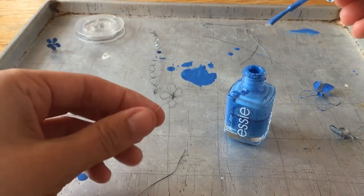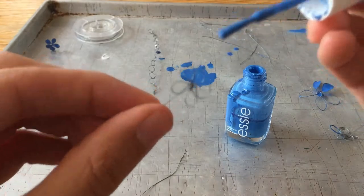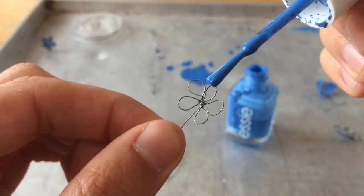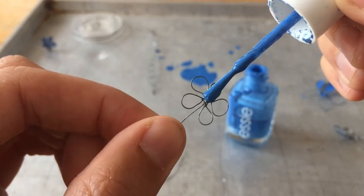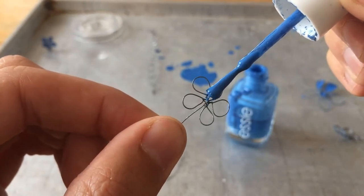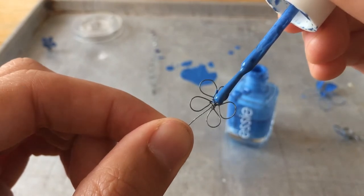Okay, so you want to get a fair bit of polish on there. And the idea is to cover the loop with nail polish.